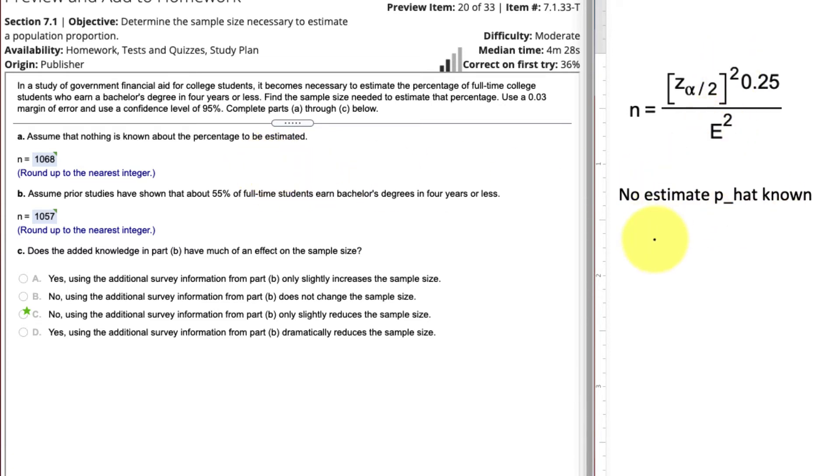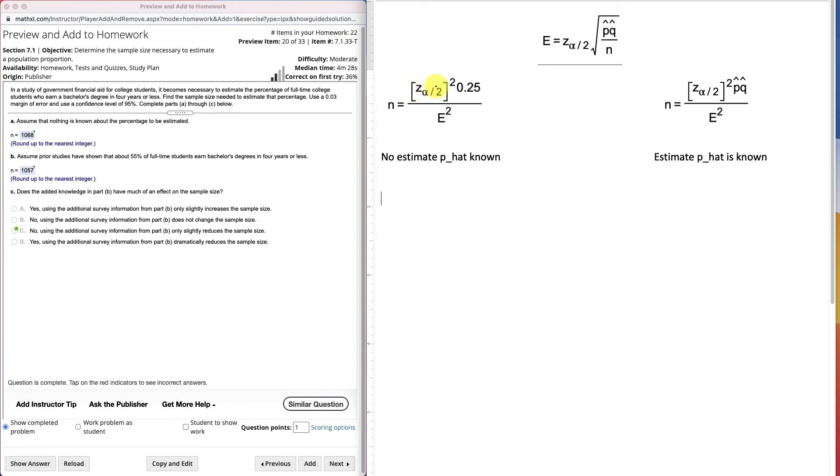So it looks like we need to have this z sub alpha divided by 2. Remember, z sub alpha divided by 2 is the area to the right of the z value. So you can get this information on a table. We go back to our confidence level, and it says 95%. So there's two tails, and we have to split that into two. So 5% divided by 2 is 2.5%. So we have 2.5 to the right and 2.5 on the left, and we want the z value that corresponds to the area to the right.